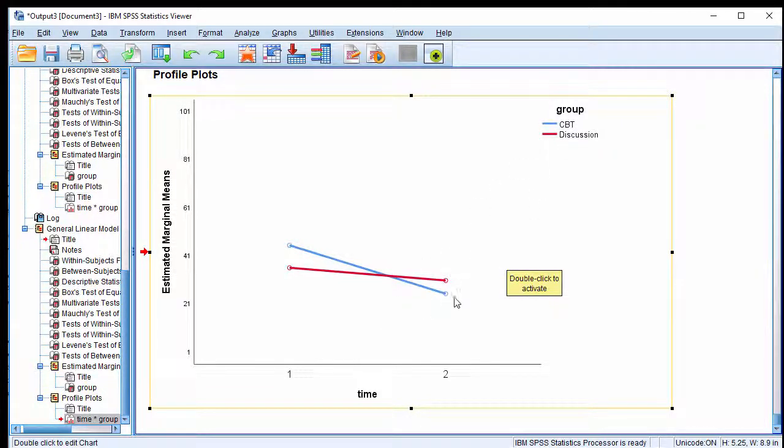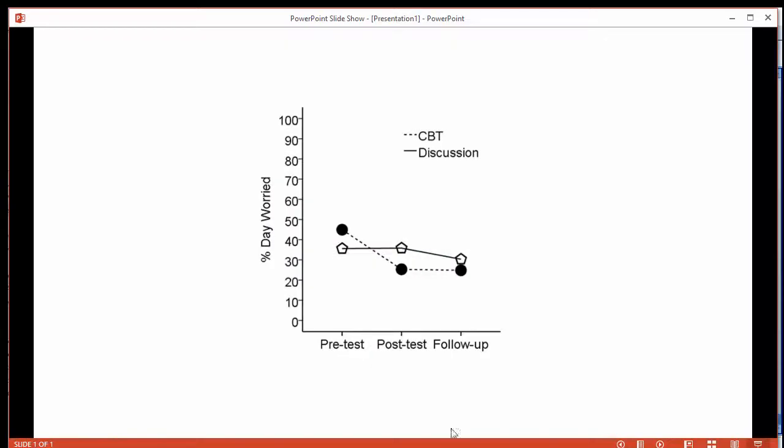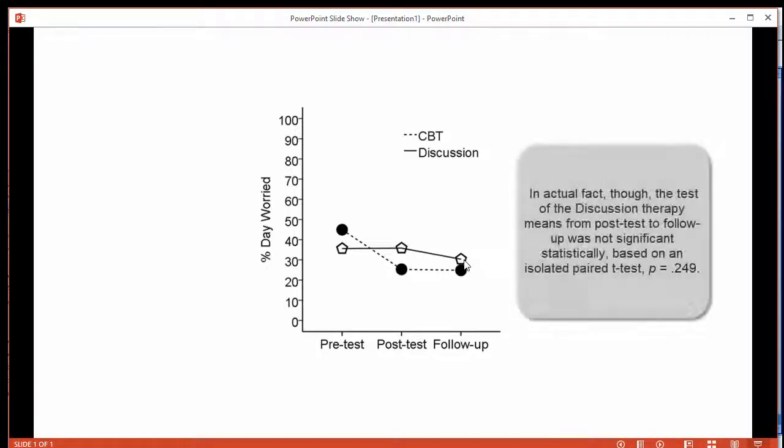So this suggests that by follow-up, CBT and discussion have basically matched each other. The efficacy of discussion group therapy is about equal to CBT at follow-up, but it wasn't pre-test to post-test. So in layperson terms, I'd probably interpret these results to suggest that cognitive behavioral therapy and discussion group therapy work about the same once you get to follow-up, but CBT achieves its results sooner. CBT goes down quite quickly from pre-test to post-test, but then it plateaus. Conversely, discussion group therapy, pre-test to post-test, not much change, but at follow-up there is. So the interaction effect is isolated with respect to statistical significance at pre-test and post-test.